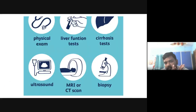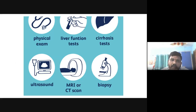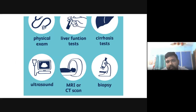Coming to diagnosis: the first step is physical examination, where you can observe skin color, eye color, and other signs. Then liver function tests and urine examinations. Blood profile tests and autoimmune antibody tests are also done. Imaging through ultrasound scanning, CT scan, or MRI can help diagnose cirrhosis. Finally, a liver biopsy — taking a small piece of the liver for microscopic examination — confirms the diagnosis of cirrhosis.